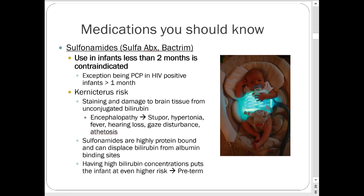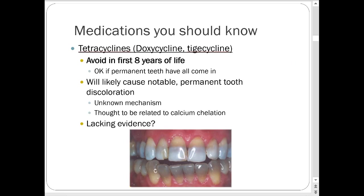Kernicterus is the reason sulfonamides are avoided in infants under two months — it occurs when unconjugated bilirubin leaks into systemic circulation and isn't cleared fast enough, which can cause brain damage and CNS complications. After two months, the body usually has enough albumin in circulation to use sulfonamides fairly safely. Tetracyclines: the recommendation is generally to avoid them in the first eight years of life, or as long as baby teeth remain, due to notable permanent tooth discoloration, thought to involve calcium chelation.